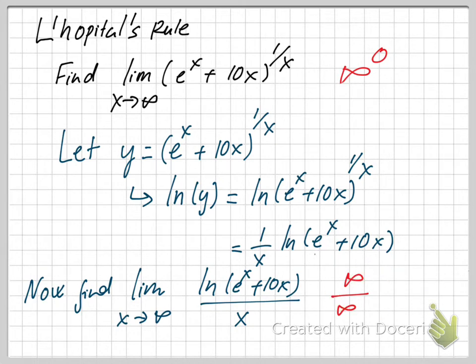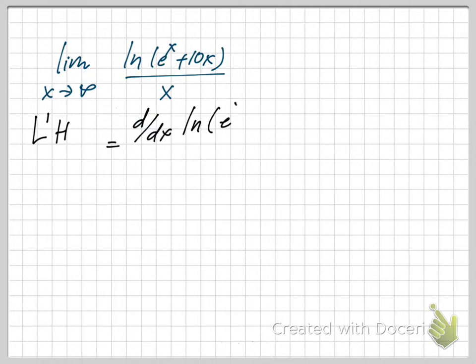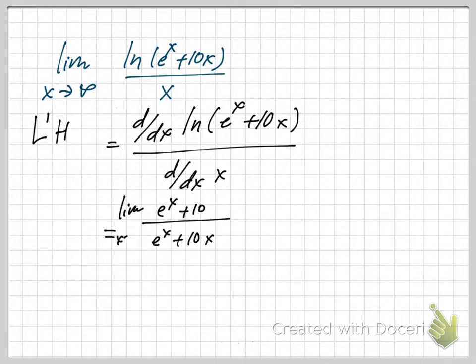As soon as we get this form, we can use L'Hôpital's rule to find the limit. L'Hôpital's rule says that if you have ∞/∞, then you can take the derivative of the top divided by the derivative of the bottom. Taking the derivative of the top using the chain rule gives you (e^x + 10)/(e^x + 10x), and the derivative of x is just 1.